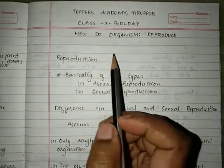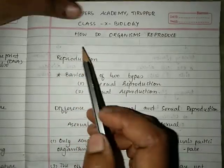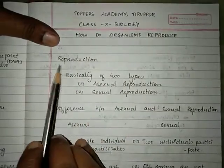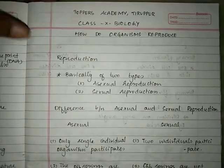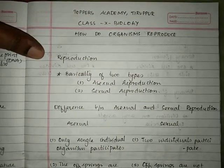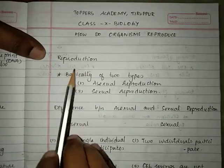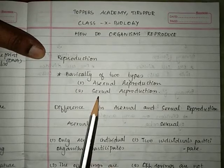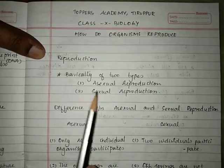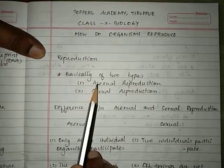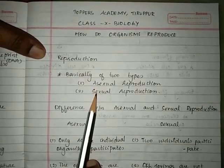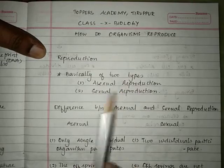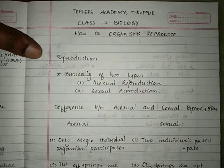Welcome back students. We will continue with the lesson 'How Do Organisms Reproduce.' We will start with the process of reproduction, which is basically of two types: asexual reproduction and sexual reproduction. First we will see the differences between asexual and sexual, and then we will get into the details of both types.